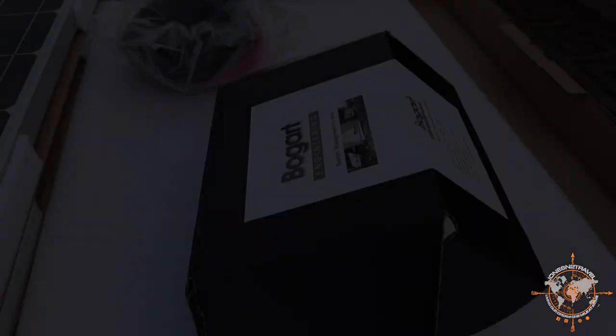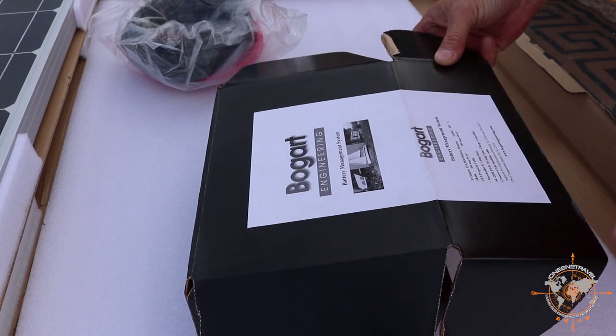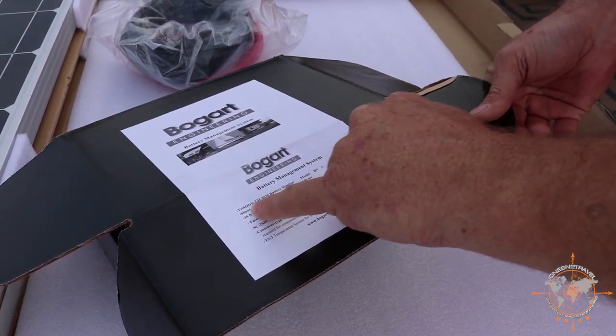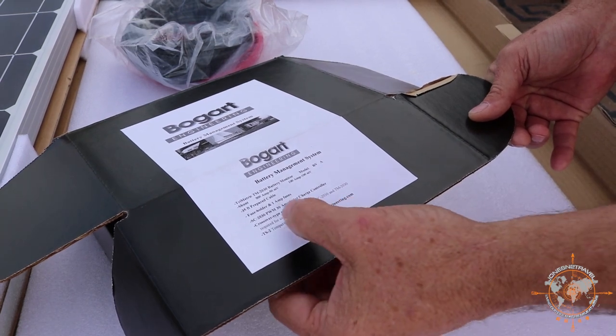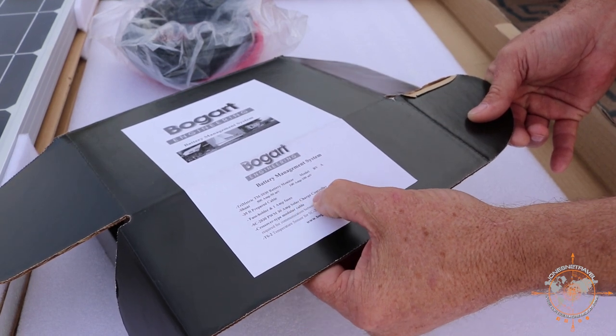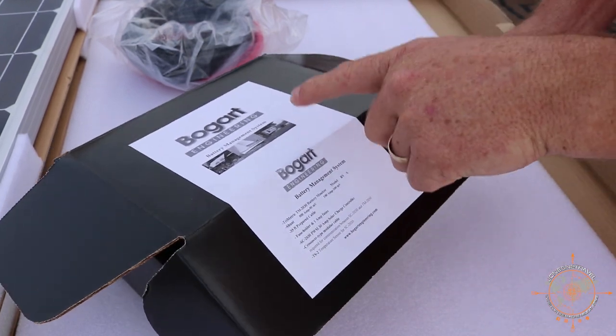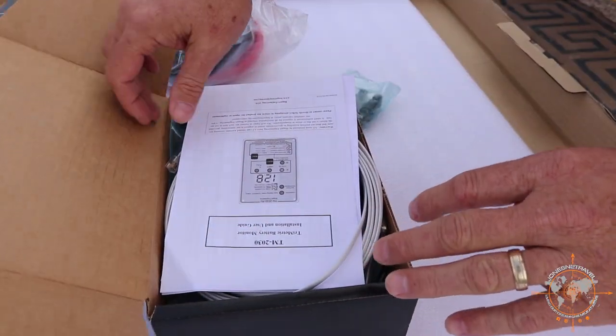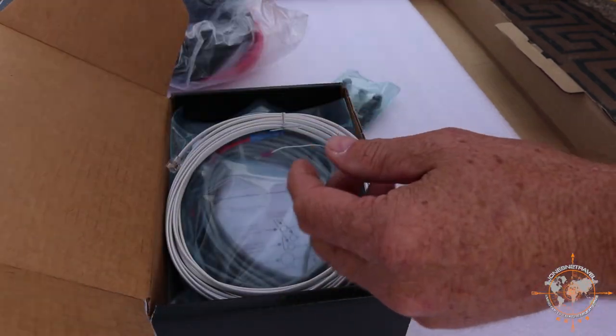All right, so we hooked him up here with a Bogart engineering battery management system and I want to show you guys what comes in this kit. It's got the Trimetric battery monitor, the 500 amp 50 millivolt shunt, 35 feet of communication cable, a fuse holder, the PWM 30 amp solar charge controller, and a crossover cable so the charge controller can communicate with the battery monitor. What I like about this setup is that these two pieces are manufactured to work together, which is really cool. I actually have two solar controllers in my rig talking to one battery monitor.